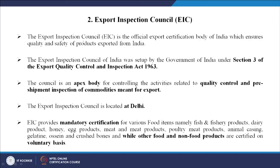The second institution is the Export Inspection Council. It is the official export certification body which ensures quality and safety of the products being exported from India. This certification is done by the Export Inspection Council. It was set up by the government of India under Section 3 of the Export Quality Control and Inspection Act 1963. The council is an apex body for controlling activities related to quality control and pre-shipment inspection of commodities meant for export.